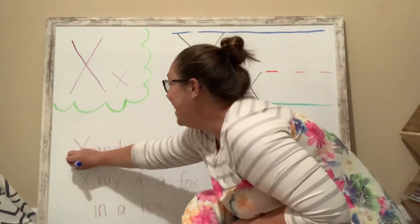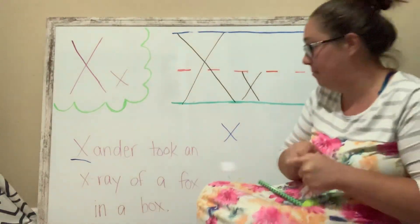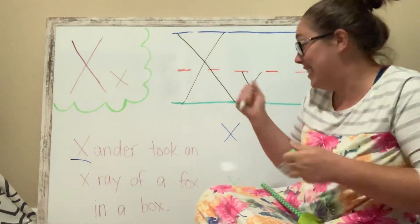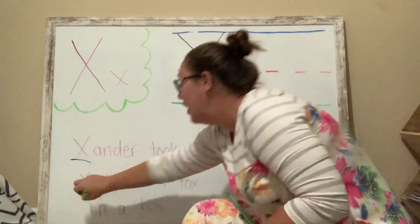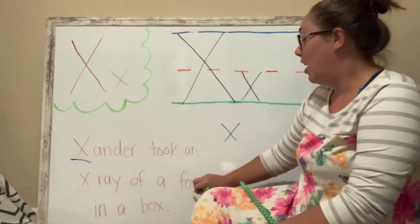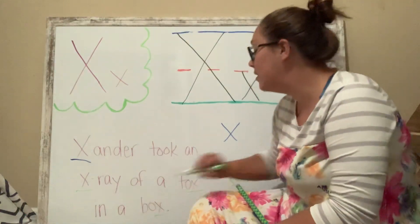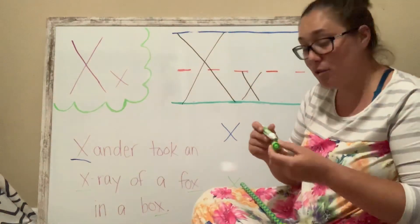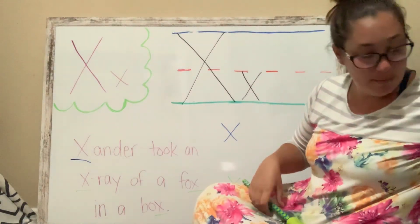Alright, Xander has an uppercase X in his name. Let's find our lowercase letter X. I see one in X-ray, right? There's one at the end of fox and one at the end of box. Do box and fox rhyme? Yeah, that's right. Awesome job.